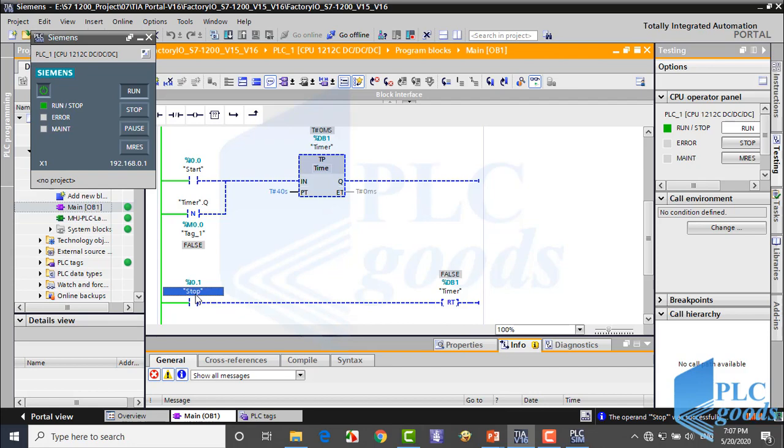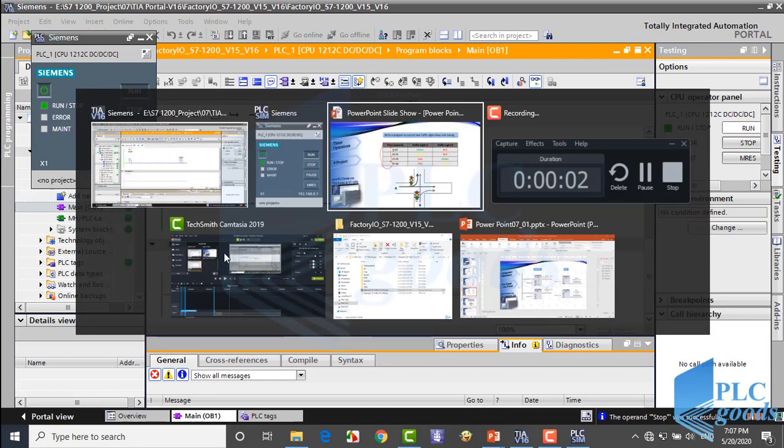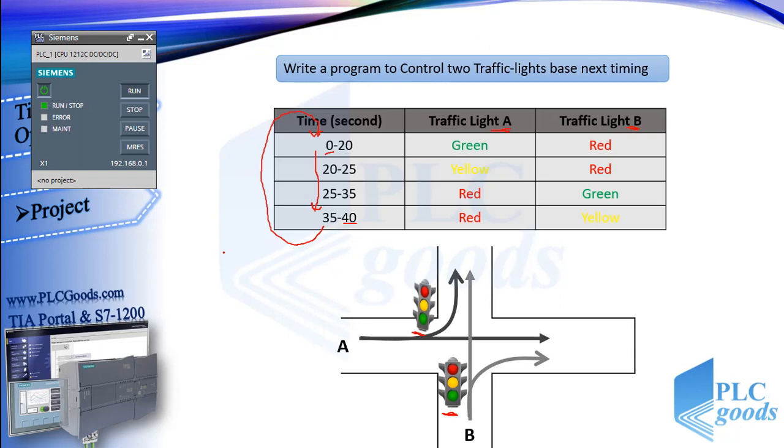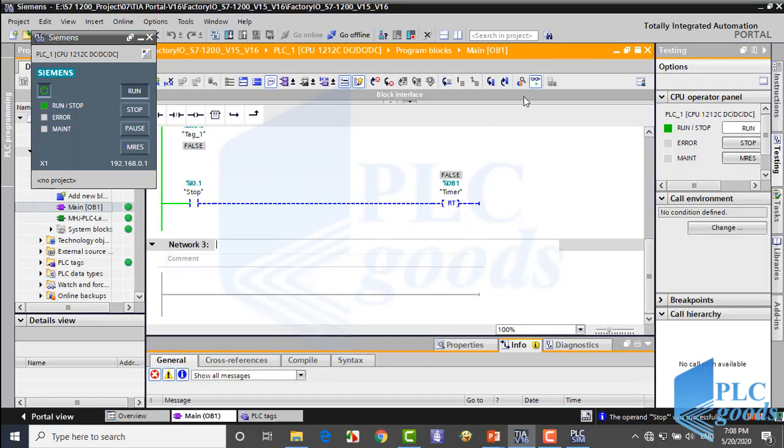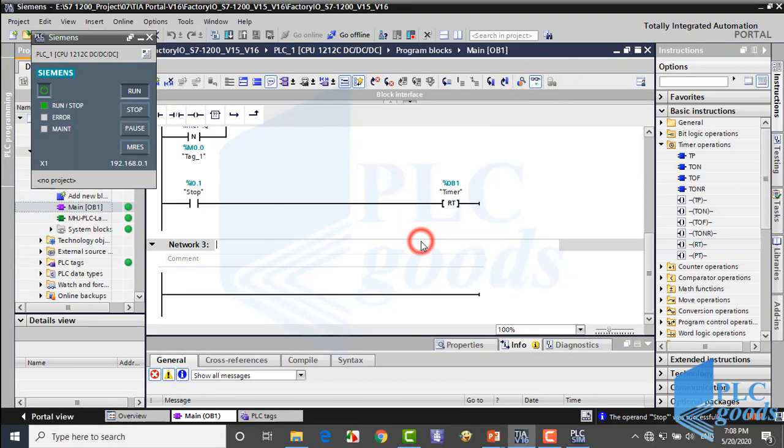Now let's complete my program. To turn on the green light of traffic light A, which I call green A, I need to detect this period of time when the current value of timer is greater than zero and less than 20 seconds. Let me exit from simulation, so I need two comparator instructions.